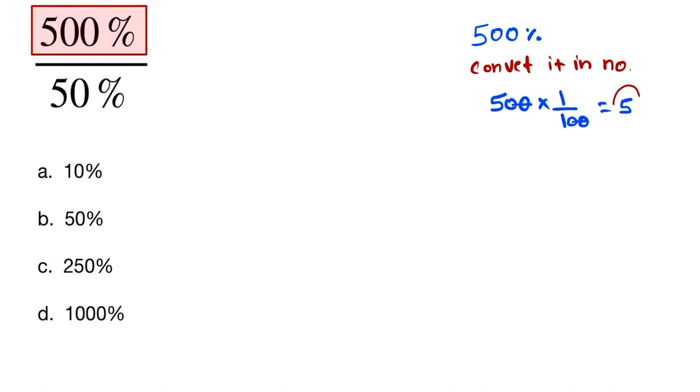500% is equal to 5 in number. Now we convert 50% into number, so we multiply by 1 by 100. So 50 into 1 by 100, and this one is equal to 5 by 10, which is equal to 0.5.